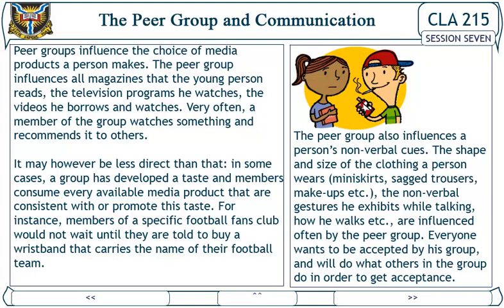The peer group also influences a person's non-verbal cues. The shape and size of the clothing a person wears — mini skirts, sagged trousers, makeups, etc. — as well as the non-verbal gestures he exhibits while talking and how he walks, are often influenced by the peer group. Everyone wants to be accepted by his group and will do what others in the group do in order to get acceptance.